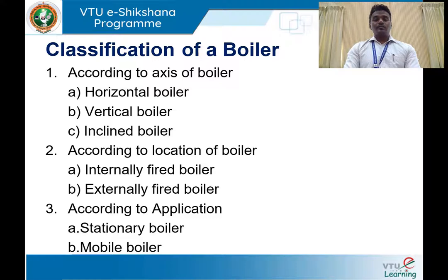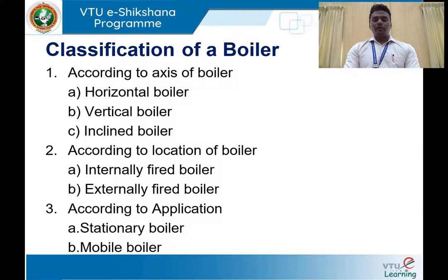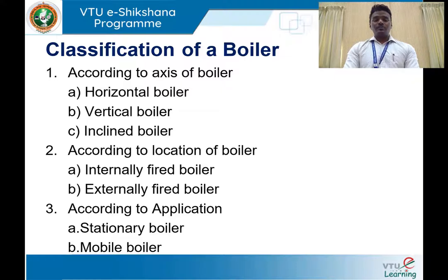Based on the location of the furnace, a boiler can be internally fired or externally fired. In order to generate steam, we need heat obtained by burning fuel in a furnace. If the furnace is a part of the boiler shell, it is an internally fired boiler. For example, in the Lancashire boiler, the furnace is part of the flue tubes inside the boiler shell. In the case of an externally fired boiler, the furnace is not part of the boiler shell — it is kept outside. In the Babcock and Wilcox boiler, combustion of fuel takes place outside the boiler shell, making it an externally fired boiler.